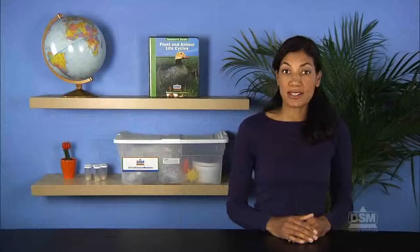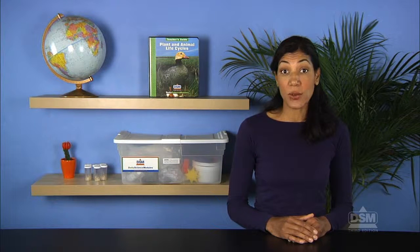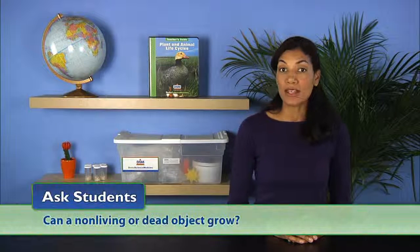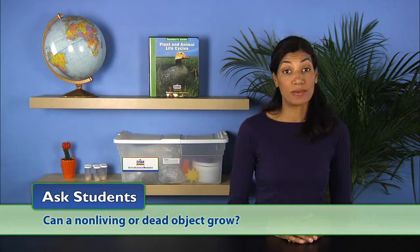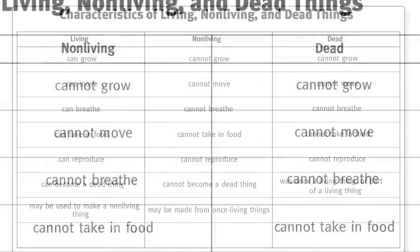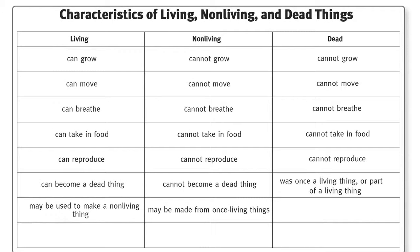Record students' responses under the heading Living. Use each listed characteristic as a point of contrast between living and nonliving or dead things. For example, ask students, can a nonliving or dead object grow? Students should answer no. Write cannot grow under the headings nonliving and dead, and repeat until the chart is complete, showing how the characteristics of living, nonliving, and dead things can be compared and contrasted.